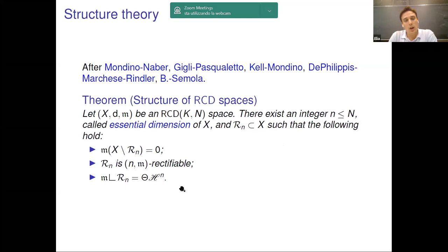Moreover, the set enjoys a regularity property. It is n-m rectifiable. Roughly, it means that far from a negligible set, R_n is a bi-Hölder manifold of dimension n. And finally, we have also a structural result for the ambient measure m. When restricted to this regular set, this measure is equal to the Hausdorff measure of dimension n times a given density. And here the Hausdorff measure of dimension n really plays the role of the volume measure over the regular set.